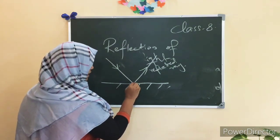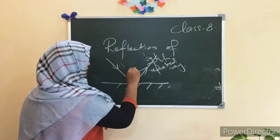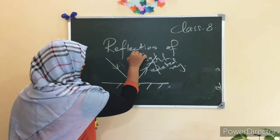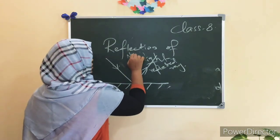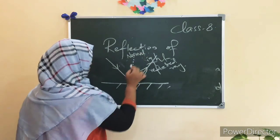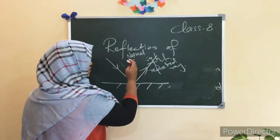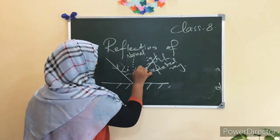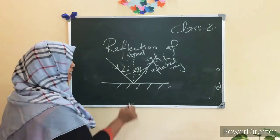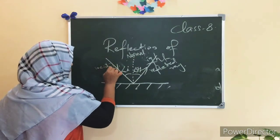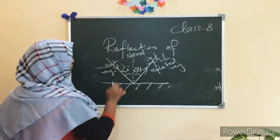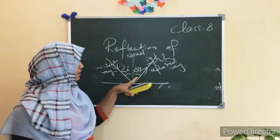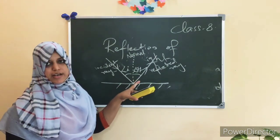Then, we construct a normal — that is, a perpendicular to the surface at right angles — at the point of incidence. After constructing a normal, we get two angles: angle I and angle R. Angle I is read as the angle of incidence, and angle R is read as the angle of reflection.